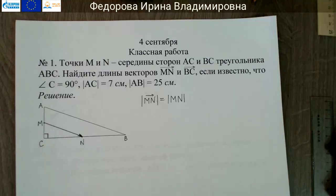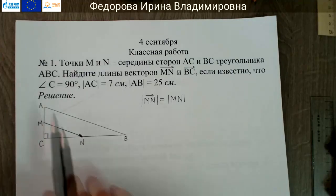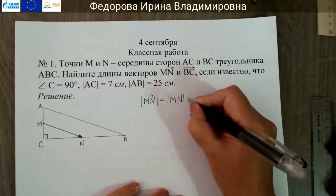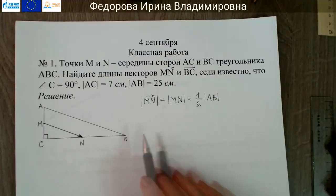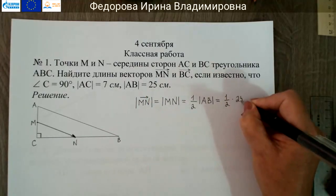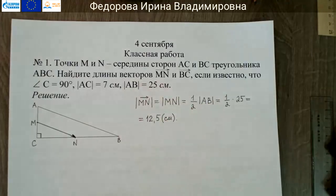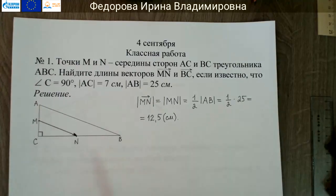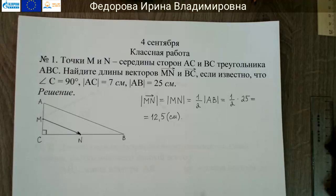МН — это средняя линия треугольника АВС. По свойству средней линии треугольника её длина равна половине длины стороны АВ, то есть половине гипотенузы. Средняя линия параллельна гипотенузе, и её длина равна половине длины гипотенузы. Гипотенуза АВ равна 25 см, поэтому длина вектора МН равна 12,5 см.